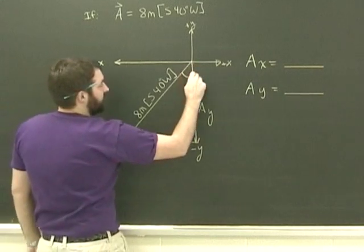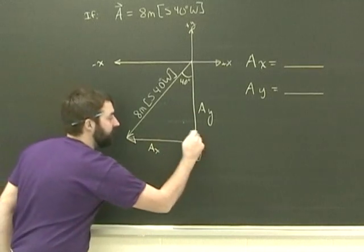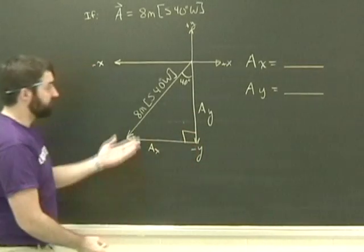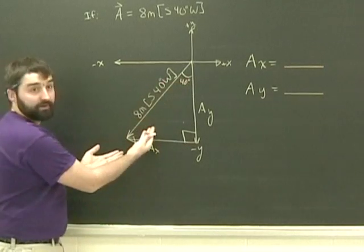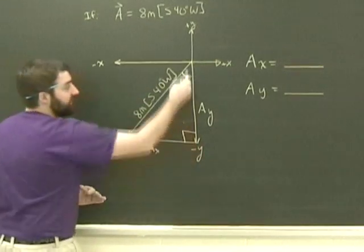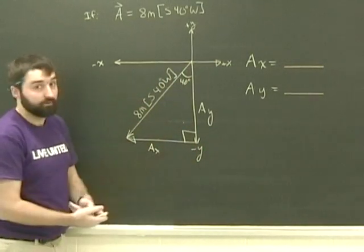South 40 degrees west, that is this angle is 40 degrees. The triangle that I've drawn is the right angle. And this is always going to be true when you're trying to find components. The original vector, in this case vector A, is the hypotenuse of the triangle, and the other two sides are in the two directions that we're interested in, in the two component directions.